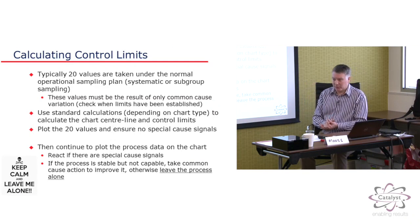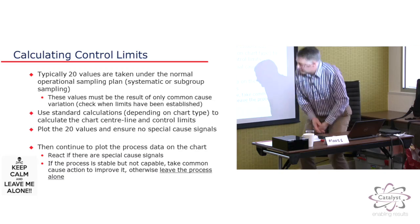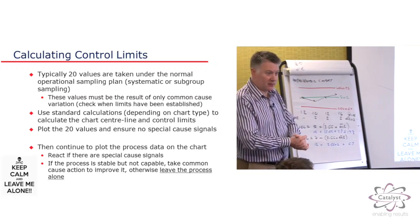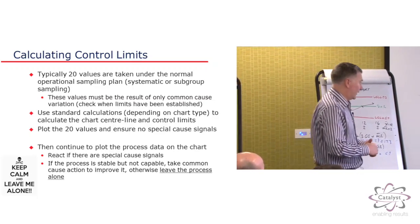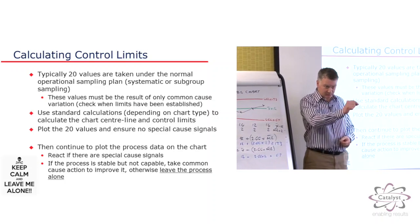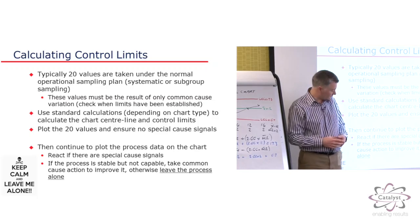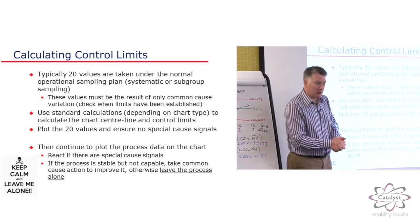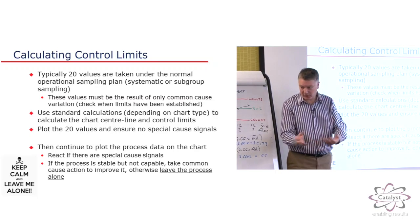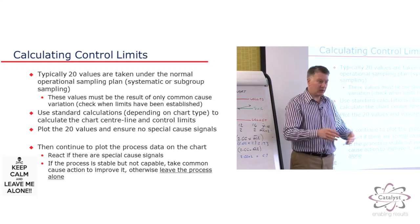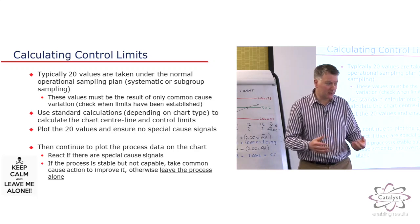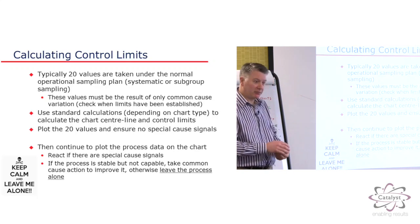Once we've established that we have a stable process, and the limits are correct because we've only used common cause variation to calculate the limits, then what we can do is kind of project those limits forward in time, do future measurements of distance from the target, and we'd expect to see them all inside those limits. If a point then appeared outside the limits or one of these other special signals appeared, then we could investigate that because that tells us something has changed. The process isn't behaving the way it normally does, but otherwise we should leave the process alone.